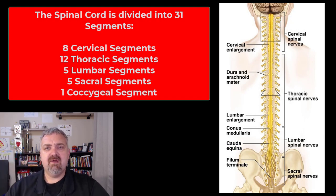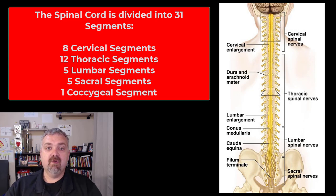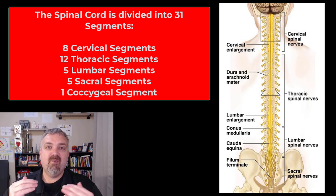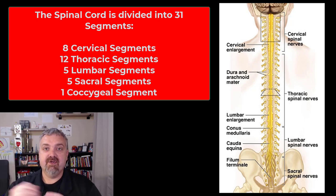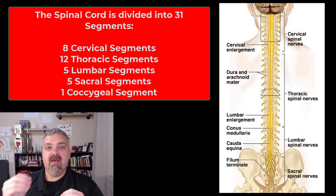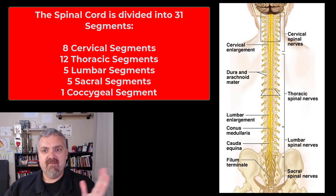We'll look at sectional anatomy of the spinal cord in a separate video, but there are 31 individual spinal segments, each named for the vertebrae where that spinal nerve originates. There are 31 because you have eight cervical, twelve thoracic, five lumbar, plus sacral and coccygeal nerves as well. As far as naming, a cervical nerve is named after the vertebrae underneath it, and all other nerves are named after the vertebrae above them.